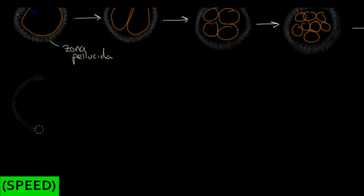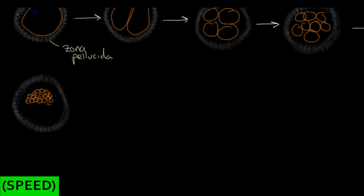You're still stuck within that zona pellucida. I'm not going to keep track of the number of cells anymore, I'm just going to draw them in. What you'll notice is I'm drawing them quite compacted, all right in the middle of the structure here. They do look like they're a little bit tighter together, and this is a process that's called compaction. The different cells within the morula start to get closer and closer together, and the cells start to get a little bit different from each other too. This process of being able to tell cells apart as they become different things is called differentiation.